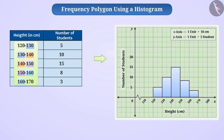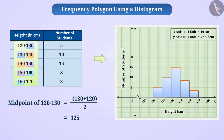To make a frequency polygon, first we need to find the midpoint of the upper side of each rectangle. The midpoint of class interval 120 to 130 will be 125. Therefore, we will go to the upper side of the rectangle drawn on the class interval 120 to 130 and mark the middle point, followed by the vertical line representing 125 on the x-axis. 125 is the midpoint of class interval 120 to 130 — we also call it a class mark.